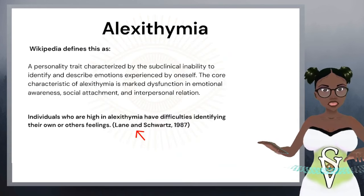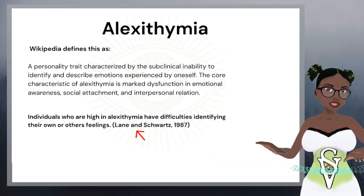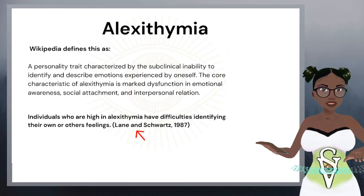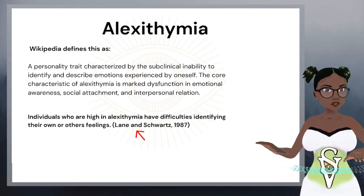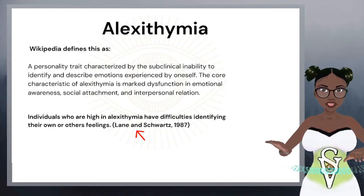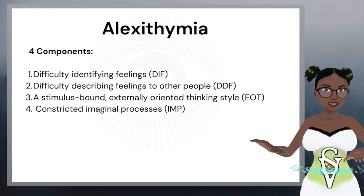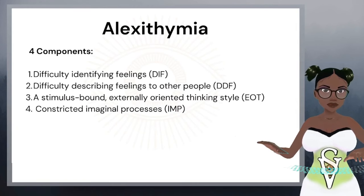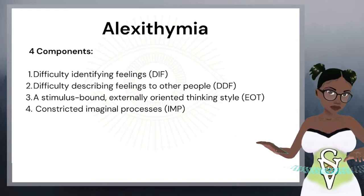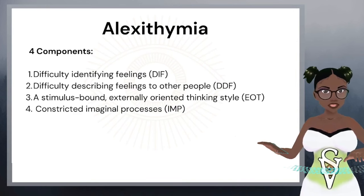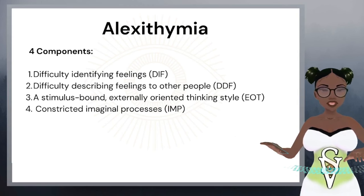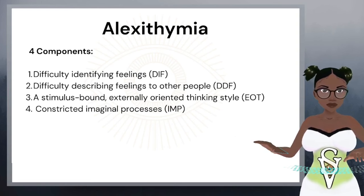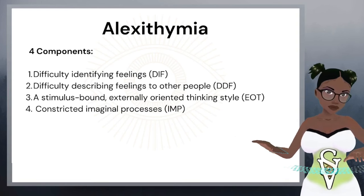Lensworts (1987) says that individuals who are high in alexithymia have difficulties identifying their own and others' feelings. There are actually four components to alexithymia: difficulty identifying feelings, difficulty describing feelings to other people, a stimulus-bound externally oriented style of thinking, and constricted imaginal processes. I'm going to cover each of these in order.